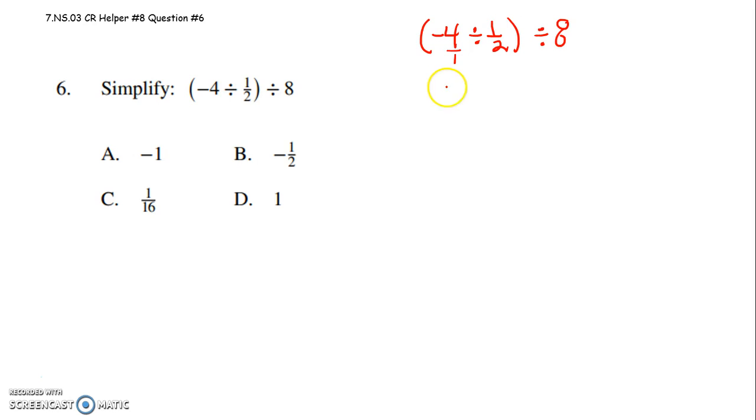drop, change, change. I don't know what little saying your 6th grade teachers taught you. But this would be negative 4 over 1 divided by 1 half is the same as times 2 over 1.